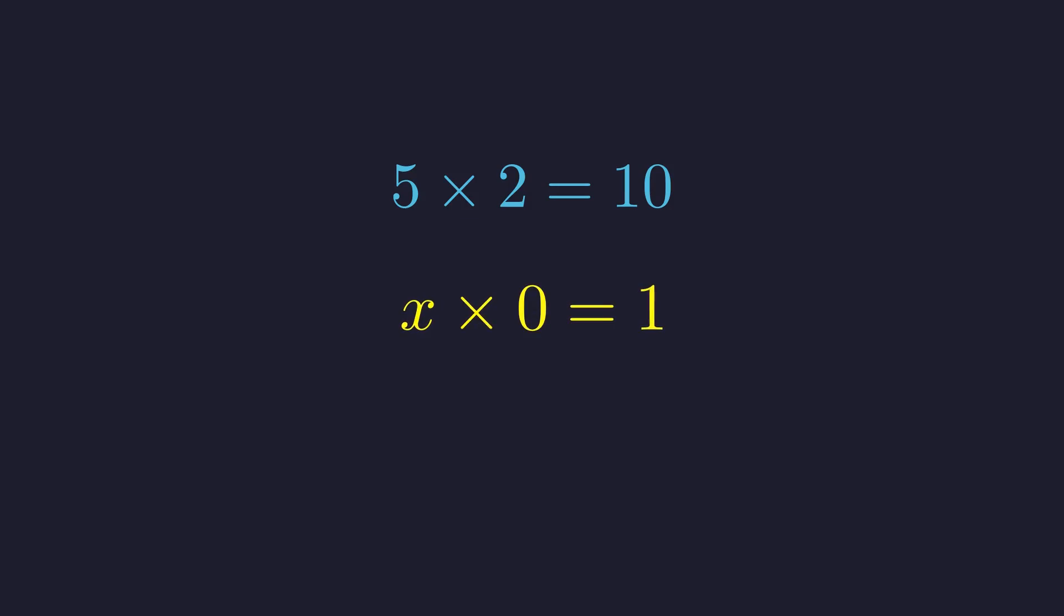But here we hit a fundamental problem. Any number multiplied by zero is always zero. Always. This isn't just a rule we made up, it's a consequence of what zero means: nothing, absence, the empty set. And this is where everything breaks. We arrive at zero equals one.